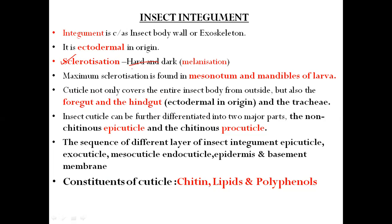Maximum sclerotization is found in the mesonotum and in the mandibles of larvae. The cuticle not only covers the entire insect body from outside but also covers the hindgut and foregut, which are ectodermal in origin. The midgut is endodermal in origin. Even the trachea is also ectodermal in origin.